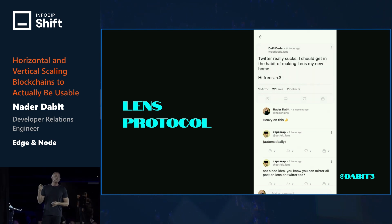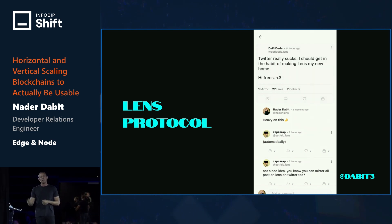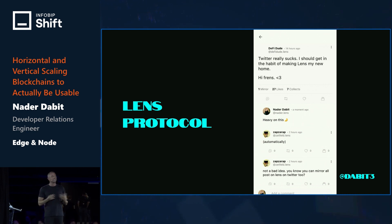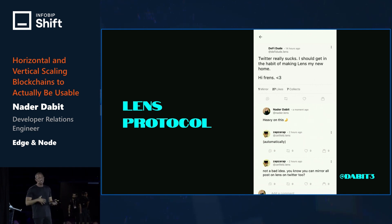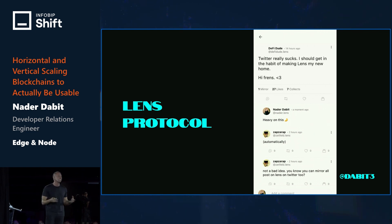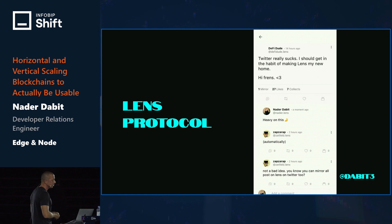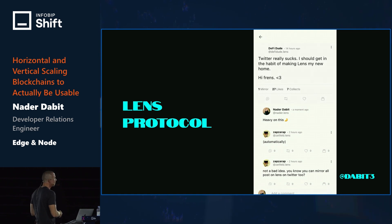Lens is built on Polygon, another network that offers a compromise between security guarantees and cost. Polygon has its own implementation — it's a sidechain, not a traditional layer one or layer two blockchain — but transaction costs are so cheap that applications and protocols can subsidize those costs.